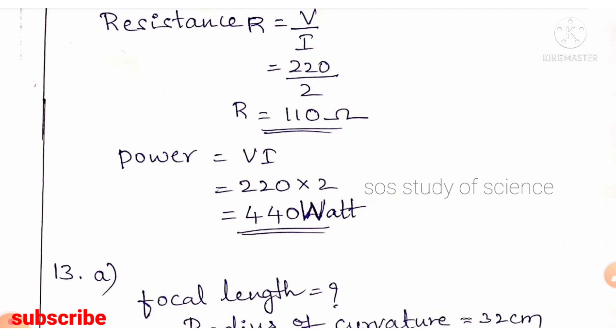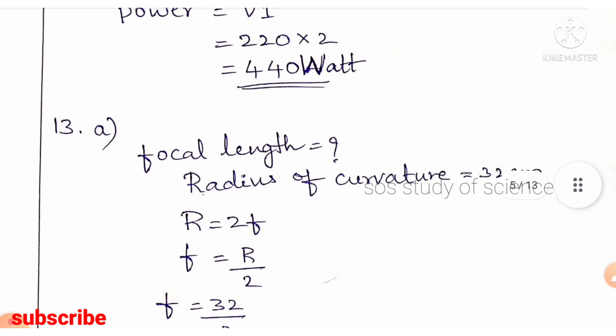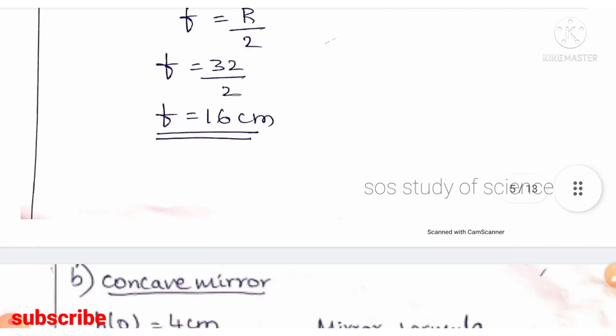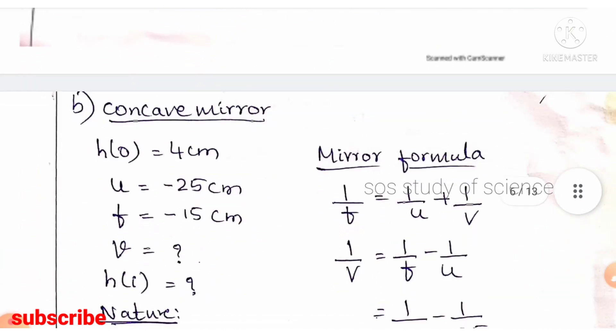Question 13 (last Physics question): find the focal length of a convex mirror with a radius of curvature of 32 cm. Using the relation: radius of curvature = 2 × focal length, so focal length = 32/2 = 16 cm.